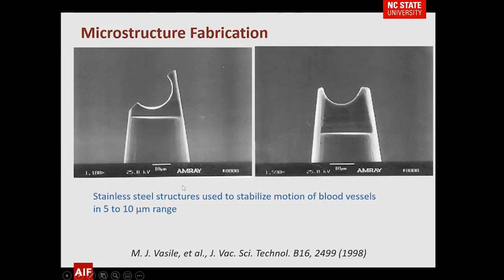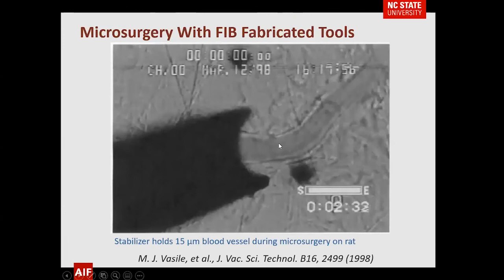One more topic: fabrication. Many people have used the FIB to say 'I can make something with that on the micro scale.' These are stainless steel structures from 1998 done at Sandia by Michael Vasile — machined with quite high precision using the FIB. Those tools were actually used to do microsurgery on a rat. If a surgeon wanted a particular tool, they made one and used it as a clamp.